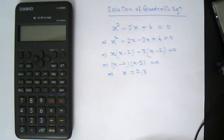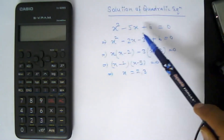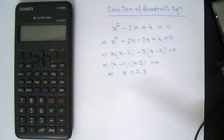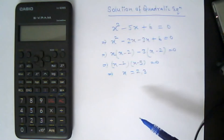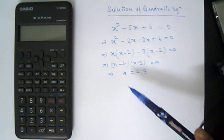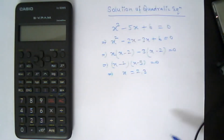Suppose we have a quadratic equation x² - 5x + 6 = 0. By manual method you can find the roots of this equation easily — the roots are 2 and 3. There are also other methods to find the roots, and now we will learn how to find them using this scientific calculator.